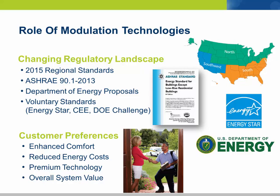Additionally, there are voluntary standards that various localities or even individual buildings can choose to pursue. Those might be things like Energy Star, the Consortium for Energy Efficiency, or CEE's various tiers, which are often tied to utility rebates. And then the Department of Energy's own rooftop unit challenge, which aims for some very high efficiency levels in the marketplace.